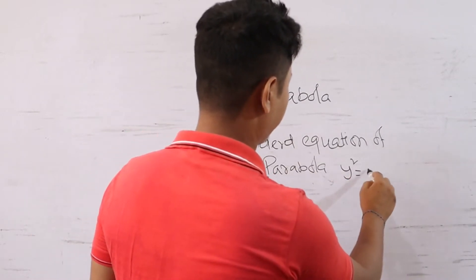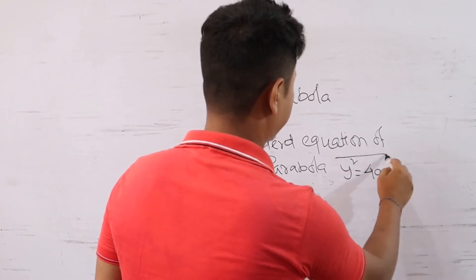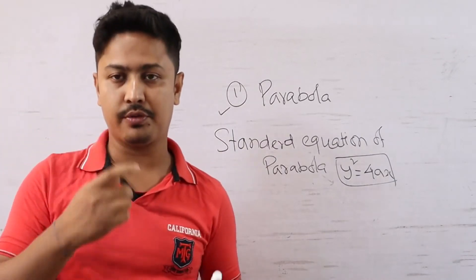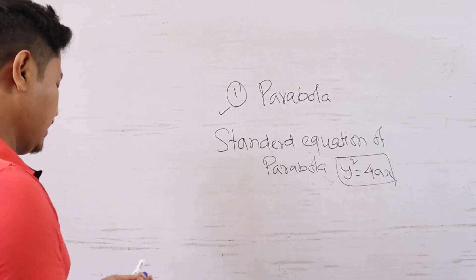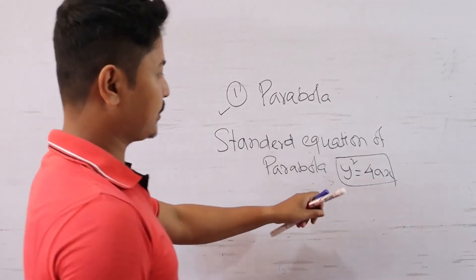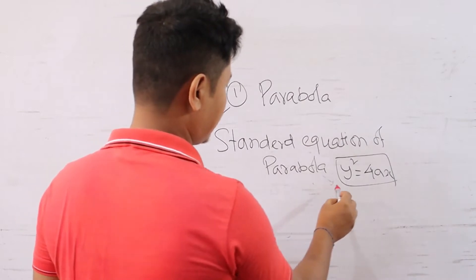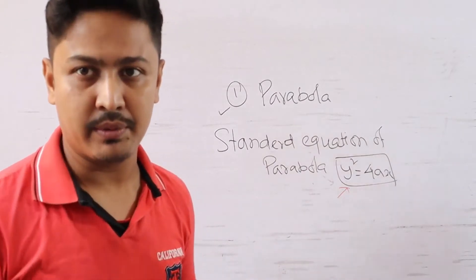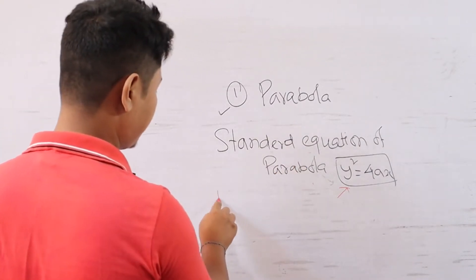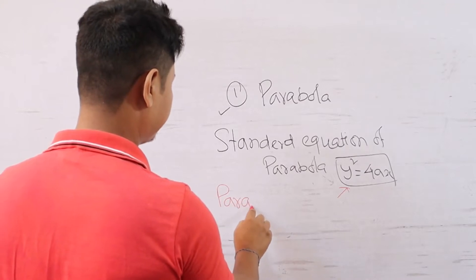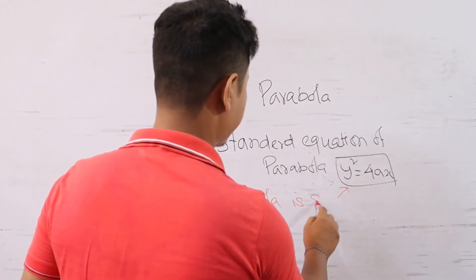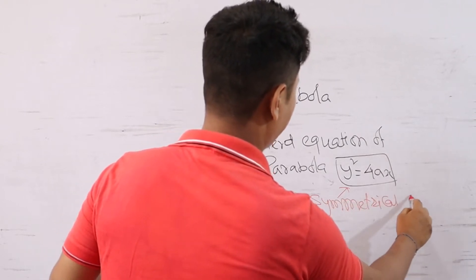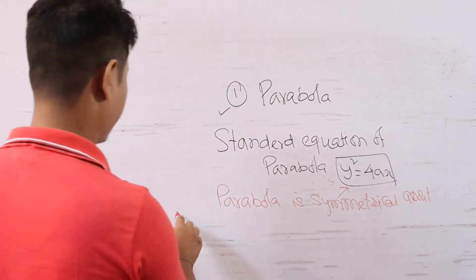The standard equation of parabola is y² = 4ax. The parabola has symmetry — this standard equation tells us that the parabola is symmetric about the x-axis.